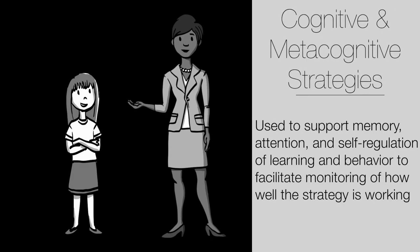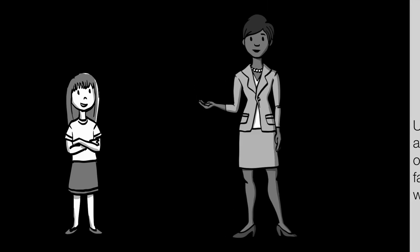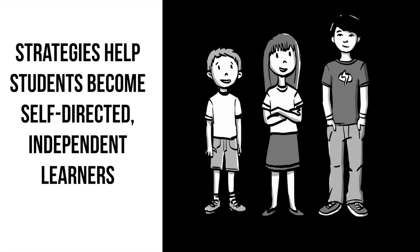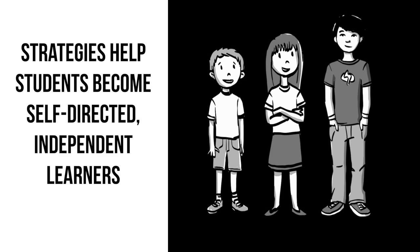Both types of strategies are used to support student memory, attention, and self-regulation of learning and behavior, and simultaneously help them keep one eye towards how well everything is working. In so doing, the strategies help students become self-directed, independent learners. In other words, when students learn and use a strategy, they are essentially learning how to learn, and then how to use the strategy to execute a skill or process.